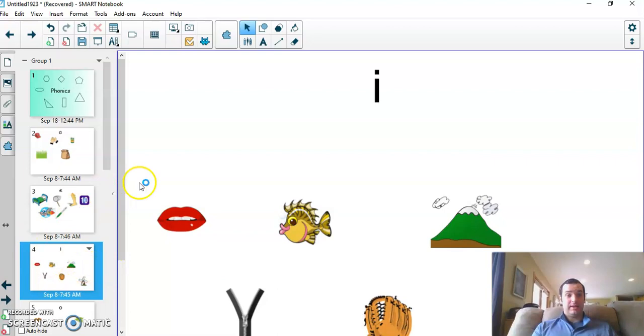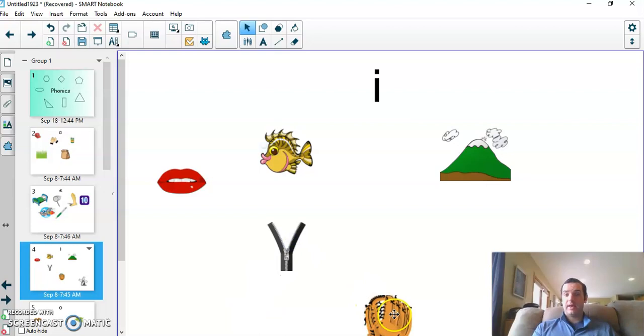Don't get that confused with the i sound, which would be l-i. So we have lips, fish, hill, zip, and mitt.